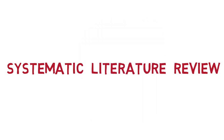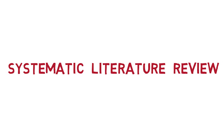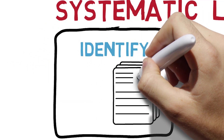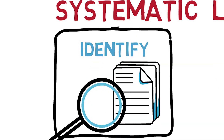If you're doing a systematic literature review, you're doing three things. Firstly, you'll identify relevant research that focuses on a very specific question. That research has to be selected based on pre-specified eligibility criteria, and we're going to talk more about the importance of systematic literature review being replicatable later in this video.